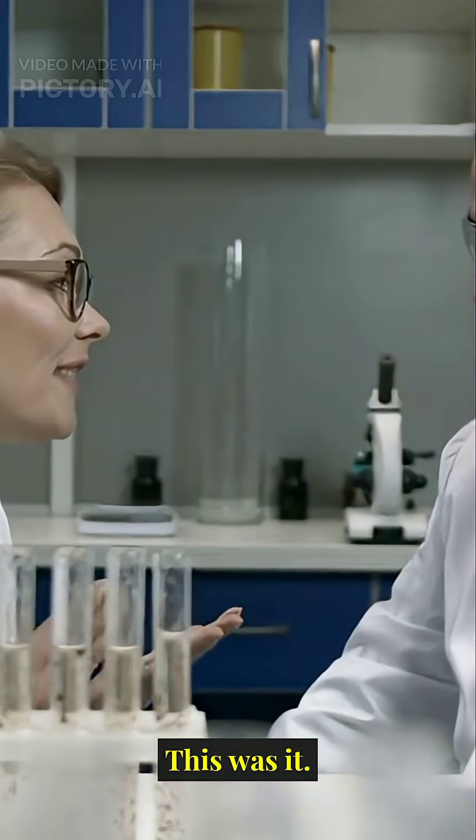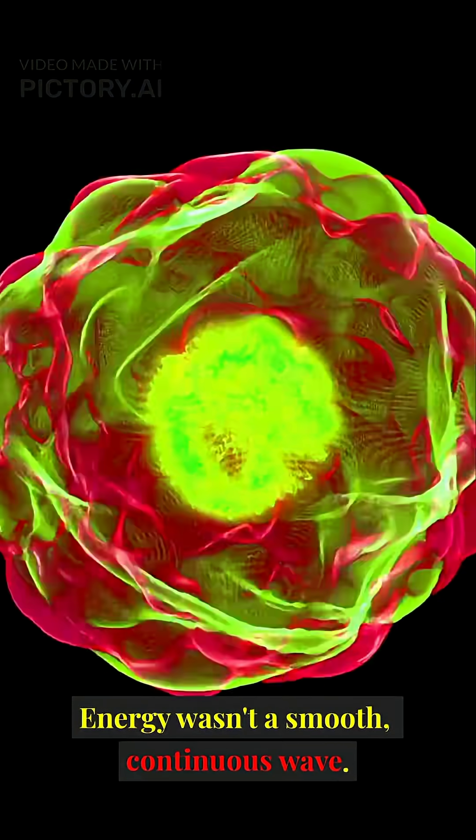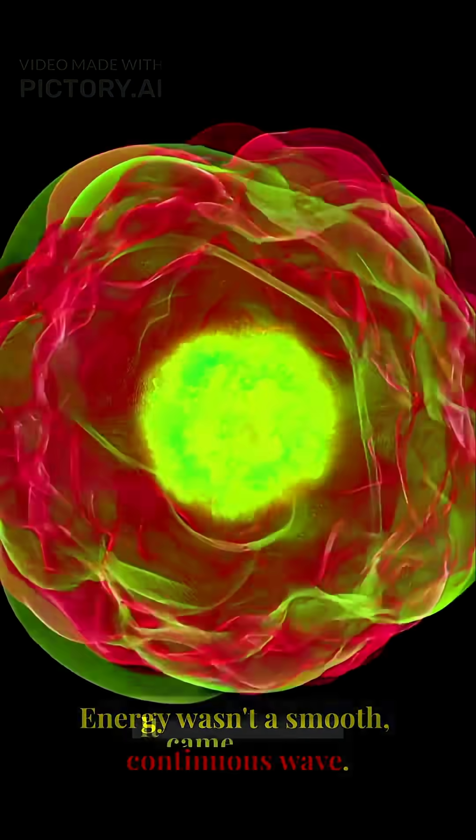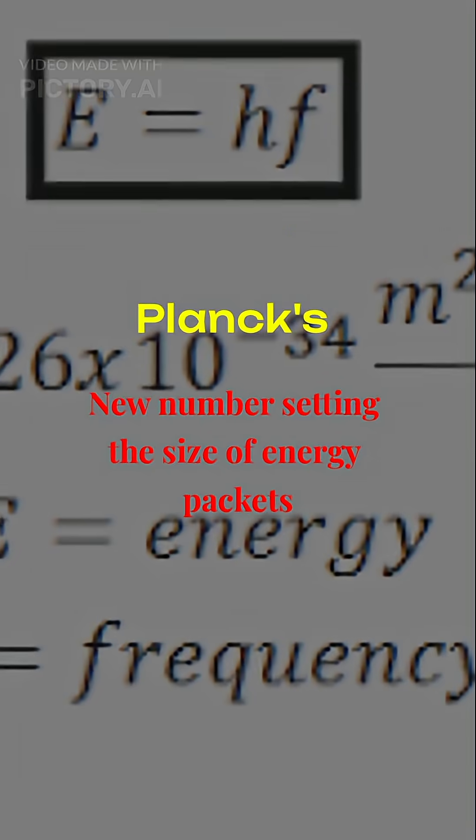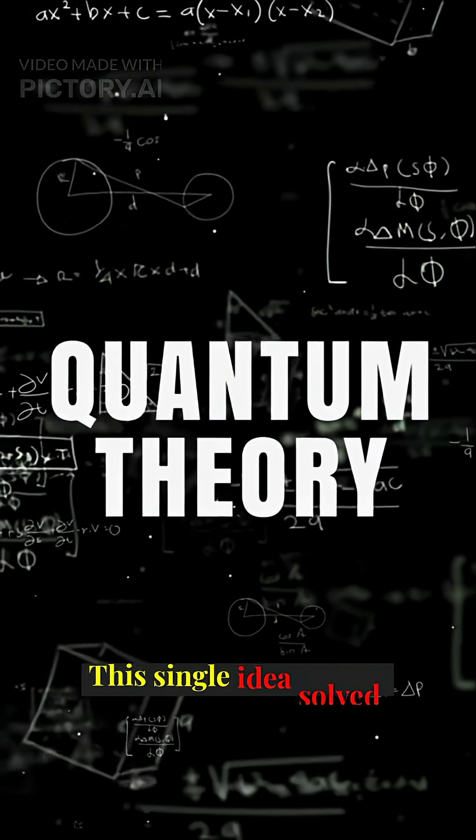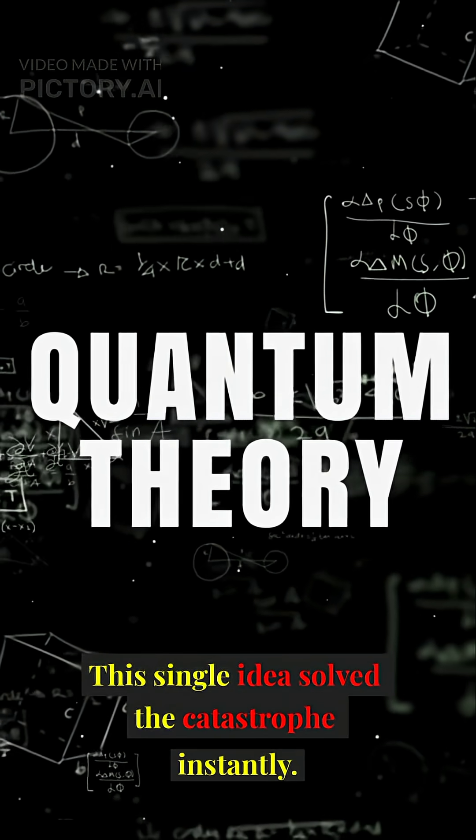This was it? Energy wasn't a smooth, continuous wave. It came in tiny, indivisible pieces. The size of each piece was set by a new number in his equation, Planck's constant. This single idea solved the catastrophe instantly.